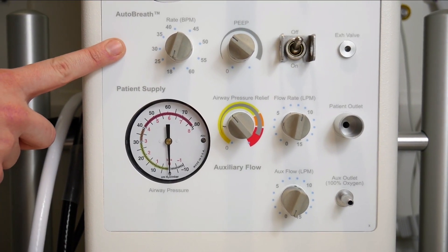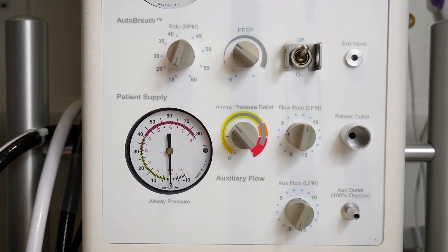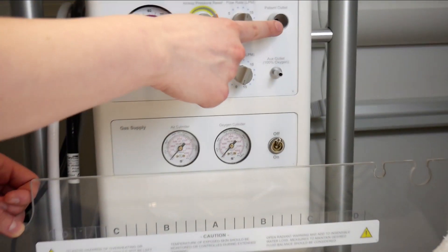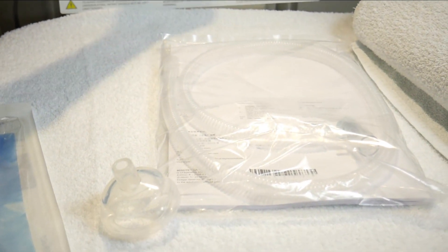This large panel corresponds to the ventilation settings. A T-piece can be attached to the auxiliary gas port here. You will have already set the FiO2 with the dial above.